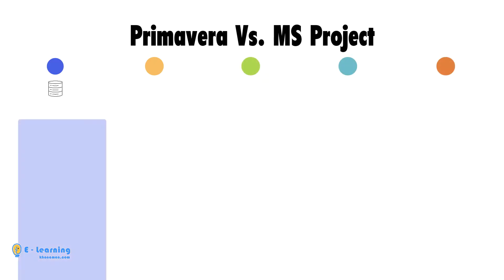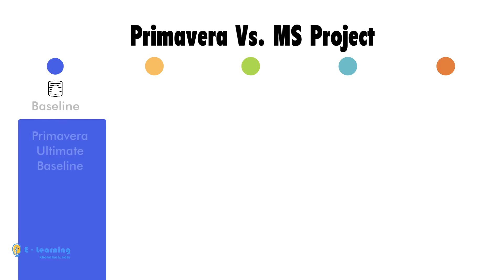In Primavera, you can create as many baselines as you want, but in MS Project it is restricted — just 11 baselines are allowed.